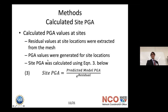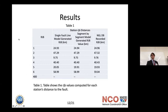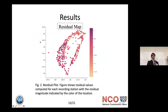Here are some results. The table of RJB distances shows that our model was actually pretty close — the average RJB value our model generated was within three kilometers of the true station recording in the NGL database. Here's a residual map of the island. Toward the north, there's a region of lower residuals, meaning the model is under-predicting the true PGA value.